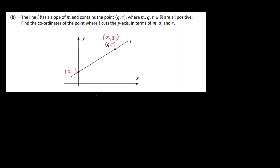Okay so the line L has slope of M and contains the point (Q, R) where M, Q and R are real and they're all positive. Find the coordinates of the point where L cuts the Y axis in terms of M and Q. Well this here is where it cuts the Y axis. I've already written it in there. I put in the X coordinate there of 0. So what I'm going to do is look at Y - Y1 = M(X - X1). So we're going to look at finding the equation of this line L.